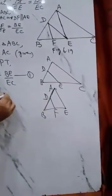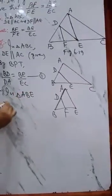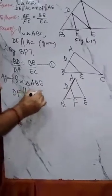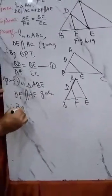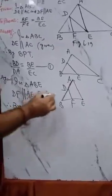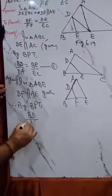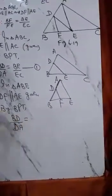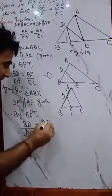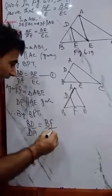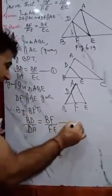So in triangle ABE, DF is parallel to AE, which is given. Again, therefore by BPT, what will we get? BD upon DA is equal to BF upon FE. This is equation number 2.